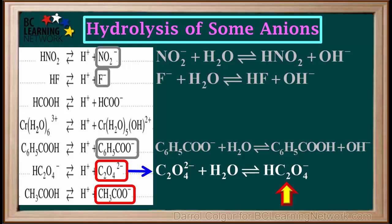The oxalate ion gains a proton to form the binoxalate or hydrogen oxalate ion, HC2O4-. And water loses a proton to form a hydroxide ion.